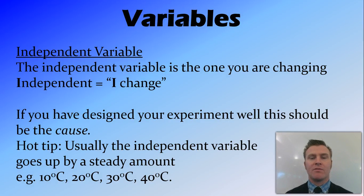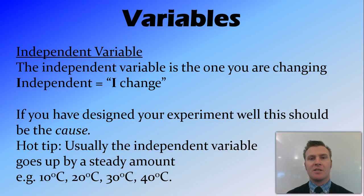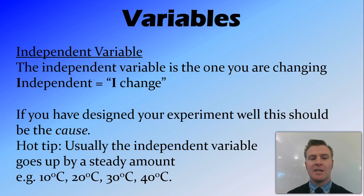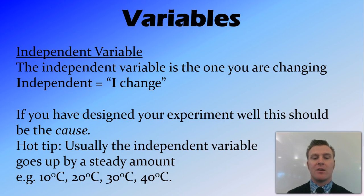We'll now look at the different variables. The first and most important is the independent variable — that's the variable that you are changing. We can remember it because it starts with 'I' and it stands for 'I change.' If you've designed your experiment well, this should be the cause in the cause-and-effect relationship. We usually choose to change it by a nice neat amount — for example, if temperature were the independent variable we might pick 10, 20, 30, and 40 degrees.